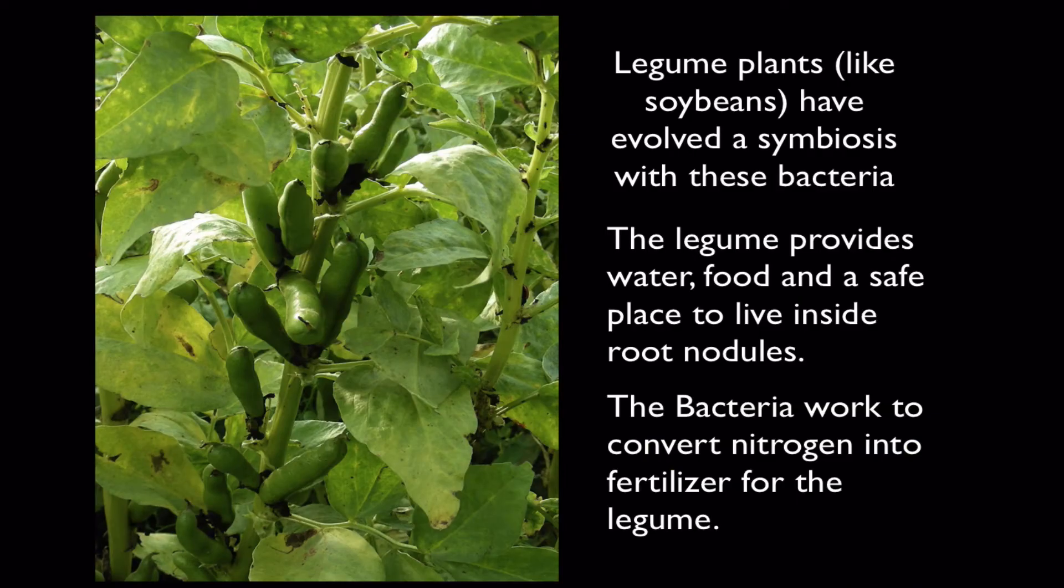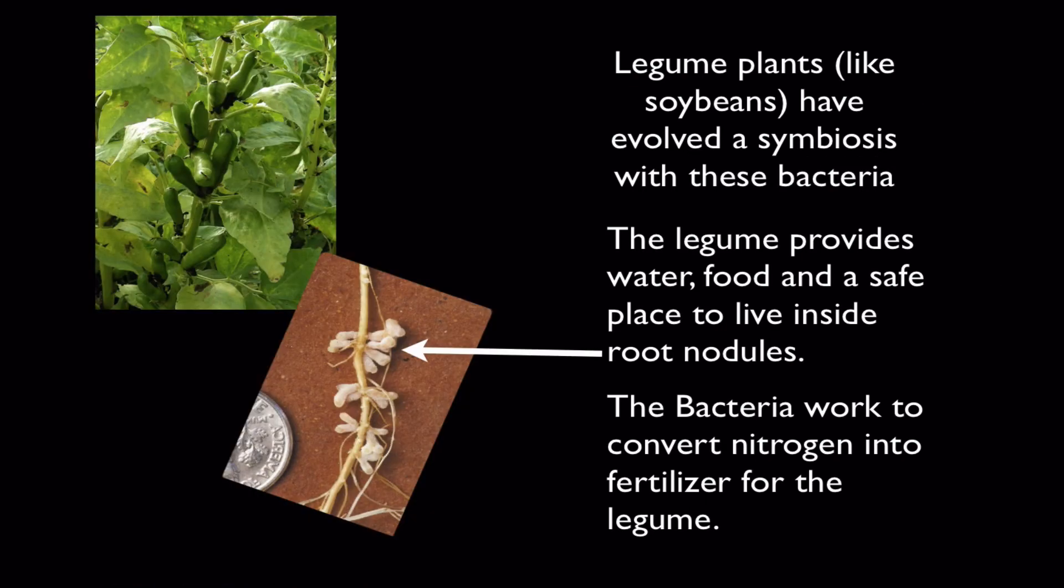Okay, so these legumes I talked about, it's a symbiosis. This is an example of a symbiotic relationship between a bacterium and a plant. And it's a type called mutualism because the bacteria benefit and plants benefit from this association. The legume provides things to the bacteria: water, food, and a safe wet place to live inside these special root nodules. So that's a positive for the bacteria. And the bacteria pay for their rent, so to speak, by working to convert this nitrogen into fertilizers or molecules that the plant can use as a fertilizer.